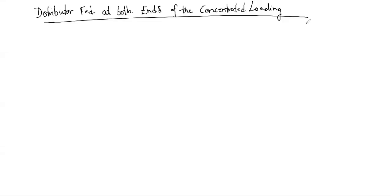Hello everyone. Today we are going to talk about the DC distributor which is being fed at both ends under a concentrated loading condition. In the previous lecture we discussed the uniform distribution which was fed at one end only. So once you have a long distributor it is desirable to feed it from both ends.